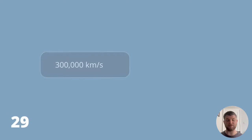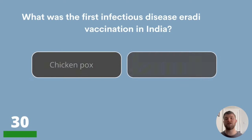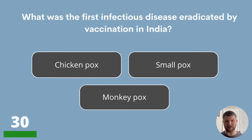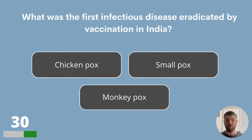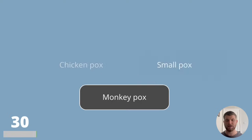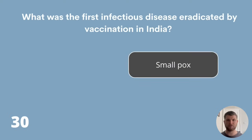Question 30. What was the first infectious disease eradicated by vaccination? Chicken pox, small pox or monkey pox? The answer is small pox.